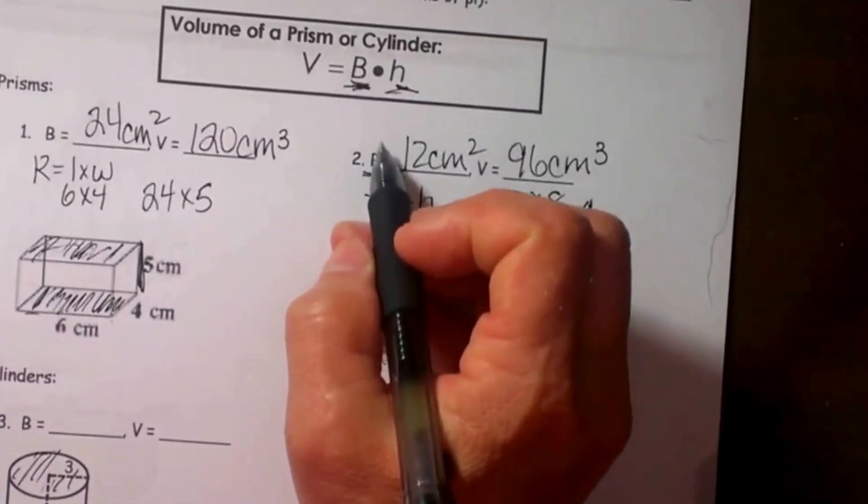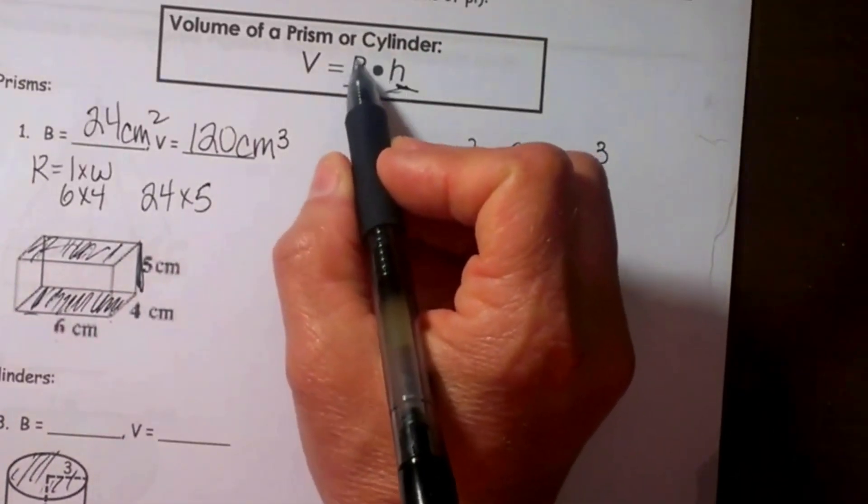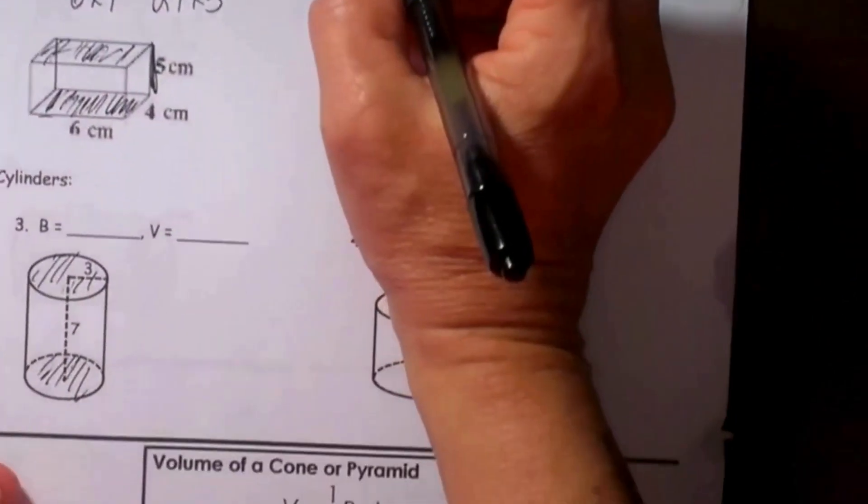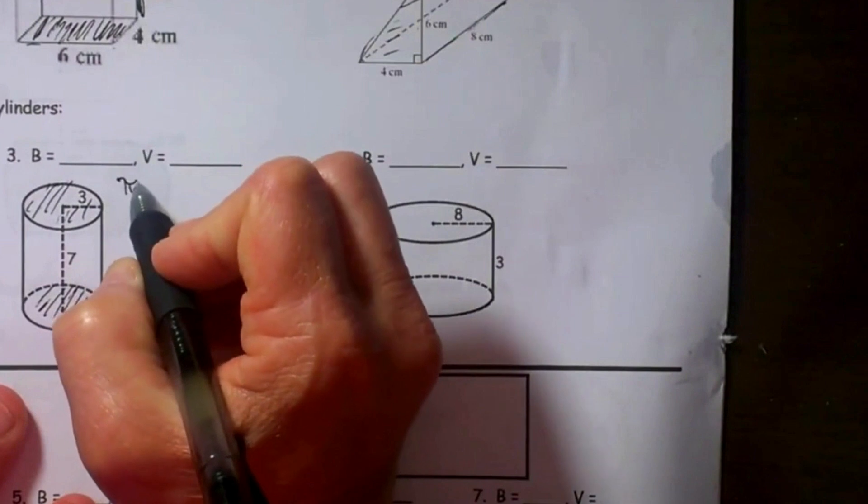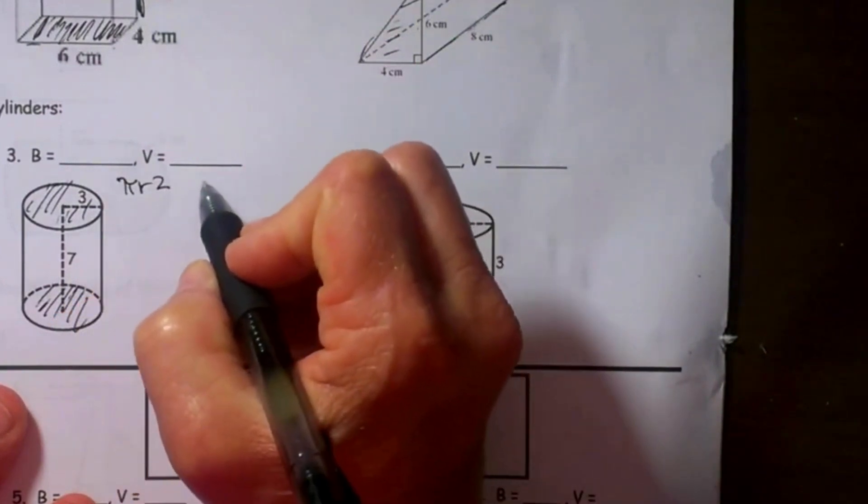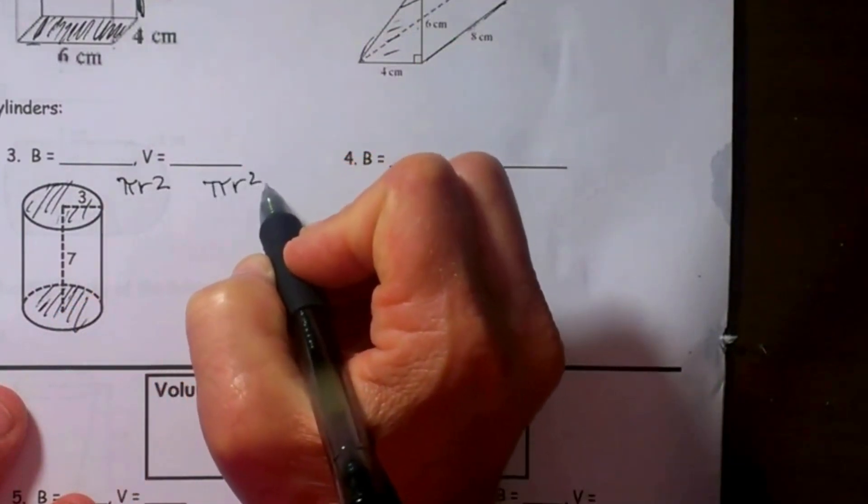So the base area would be πr² and then times the height. So base area is πr² and the volume is πr² times the height.